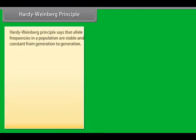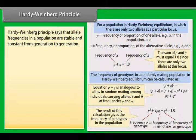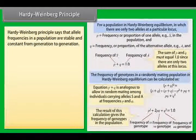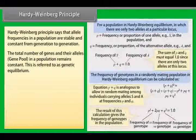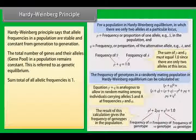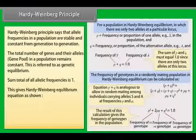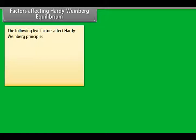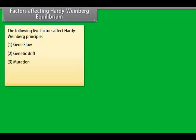The Hardy-Weinberg principle states that allele frequencies in a population are stable and constant from generation to generation. The total number of genes and their alleles — that is, the gene pool — in a population remains constant. This is referred to as genetic equilibrium. The sum total of all allelic frequencies is one, giving the Hardy-Weinberg equilibrium equation.